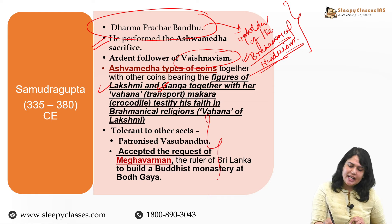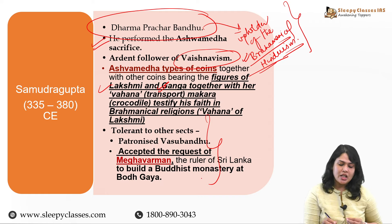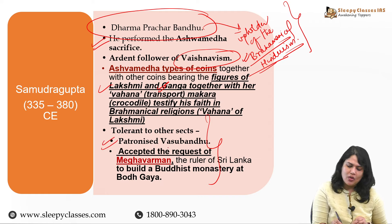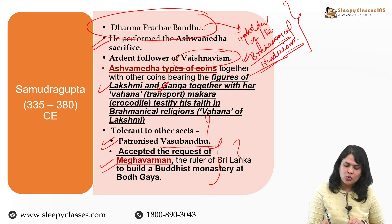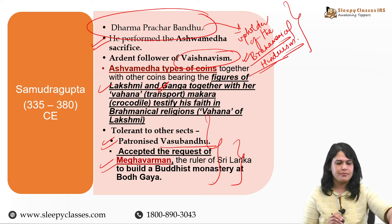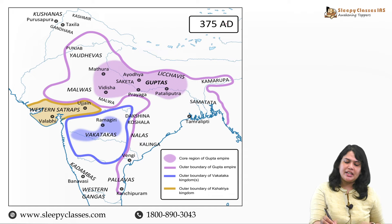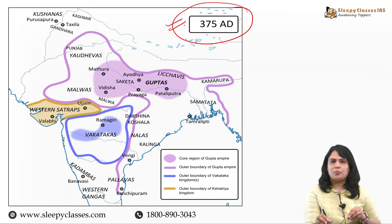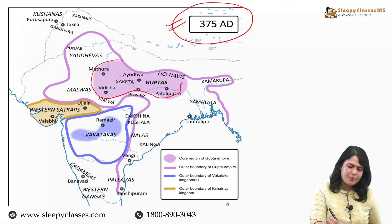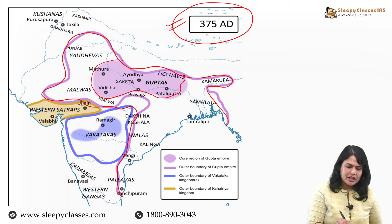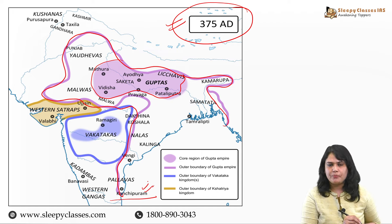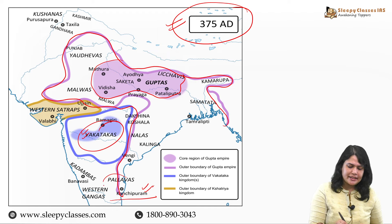Kyunki inhon ne jo famous Buddhist scholar hain - Vasubandhu - unko patronize kiya. Not only this, jab Sri Lanka ke ruler Meghavarna ne inse request kiya ki woh Bodh Gaya mein ek Buddhist monastery establish karna chahate hain, toh unko iske bhi permission de di. So yeh hai Samudragupta ke baare mein. Aur aap dekhenge ki inke time period ke dauran Guptas ka core area yeh pink shaded portion jo aap dekh rahe ho, itna hai. But agar ham inke overall territories dekhen, toh Gupta empire woh ab itna zyada extend ho chuka hai, reaching till Kanchipuram. Inke contemporaries hain Vakatakas and the Pallavas.